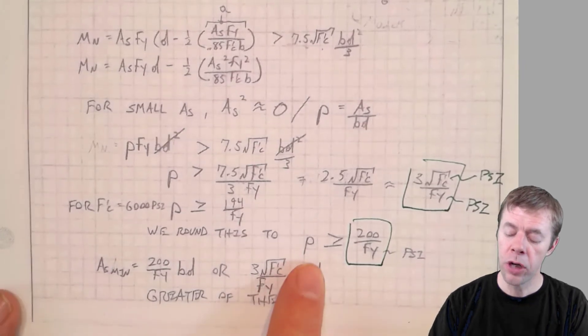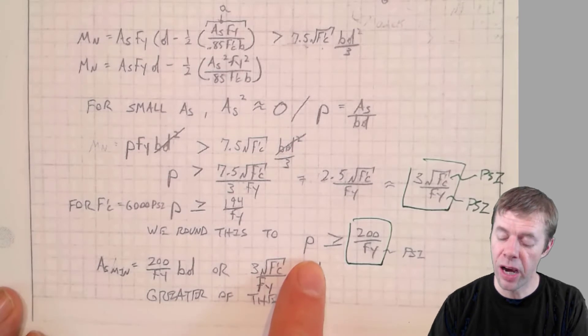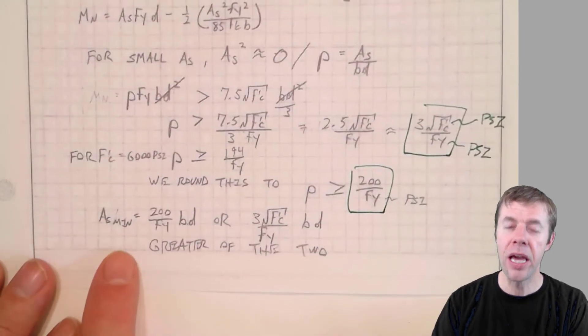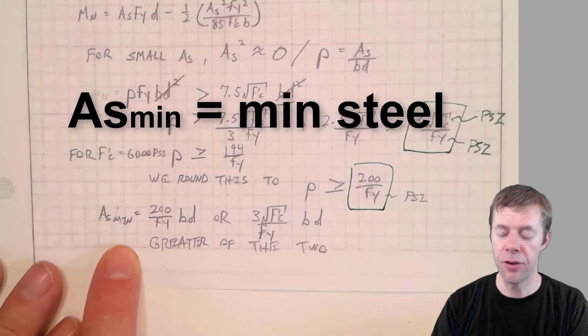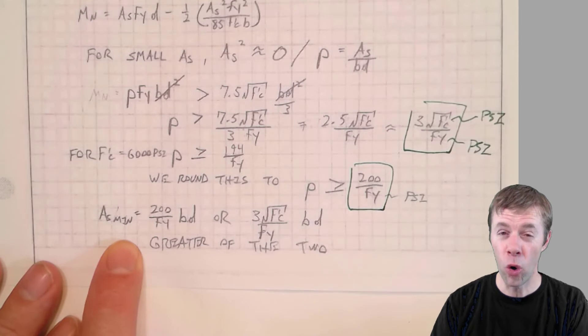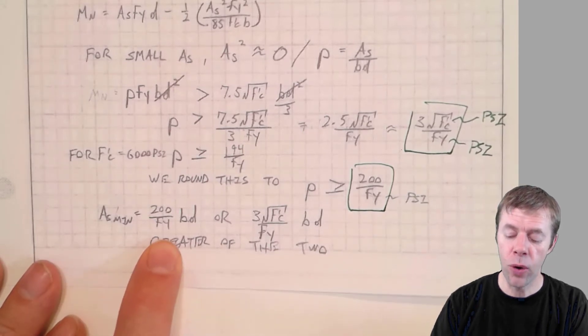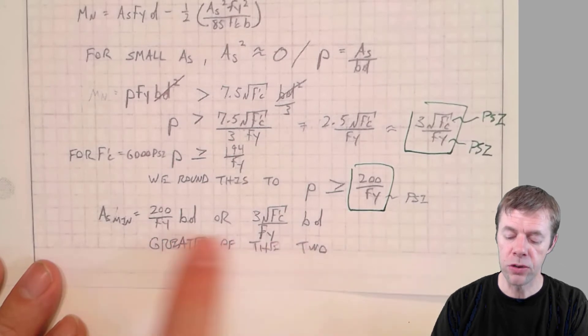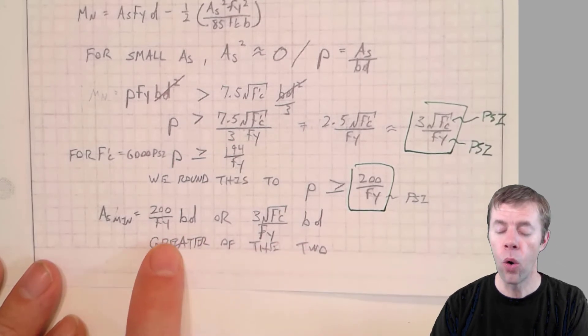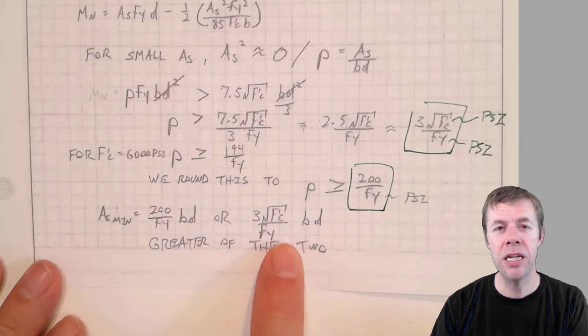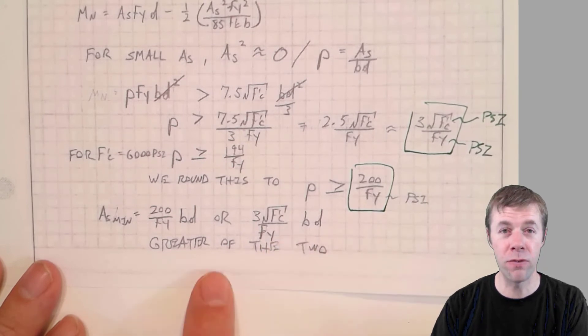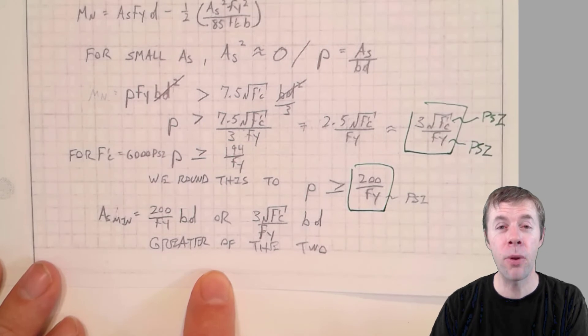Now we're going to change the rho. We're going to multiply by BD on both sides to go from rho just to AS. And we get our magical AS min. This is the minimum amount of steel we always have to have. You're always going to use this when you do checks. And we'll talk about it as we do designs of reinforced concrete beams. AS min is equal either to the greater of these two equations. 200 divided by FY times BD or 3 root F prime C divided by FY times BD. It's the greater of the two. It's pretty easy. Just plug and chug.